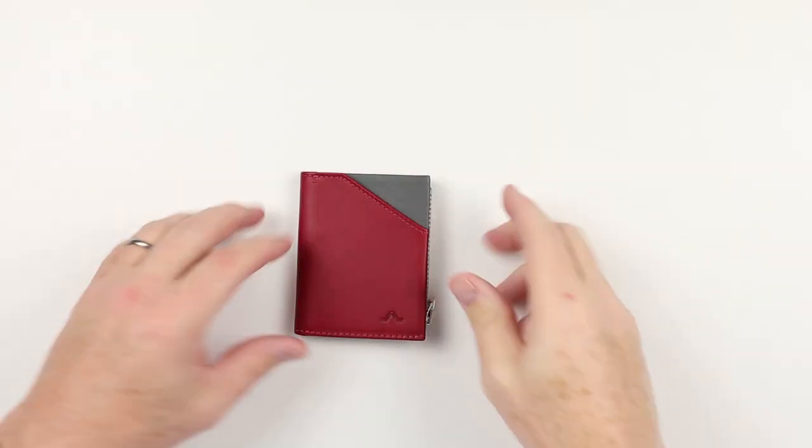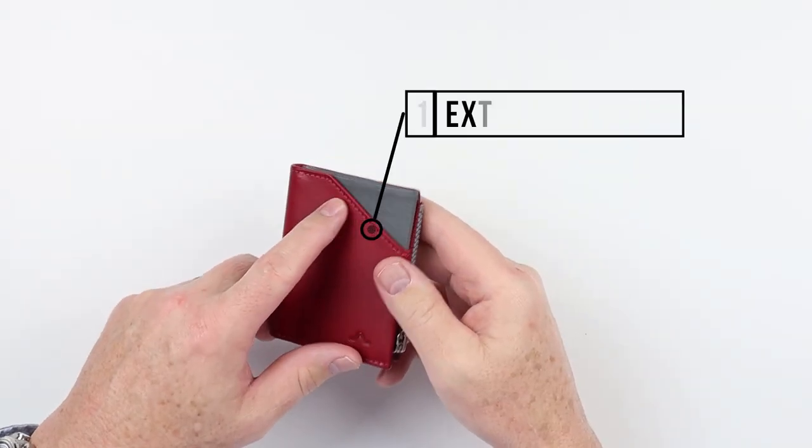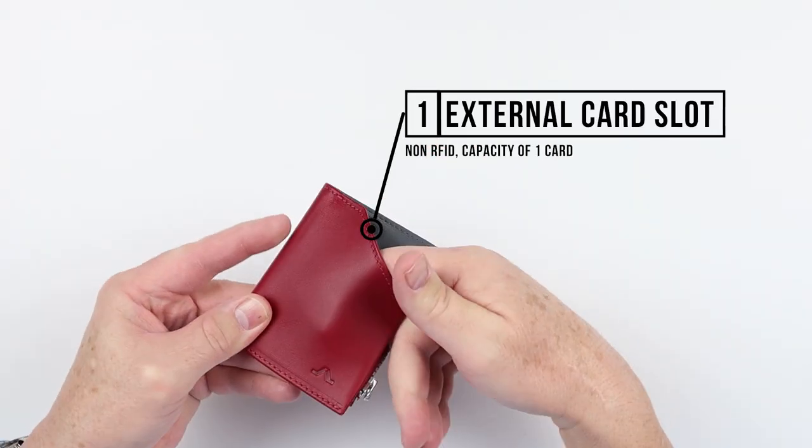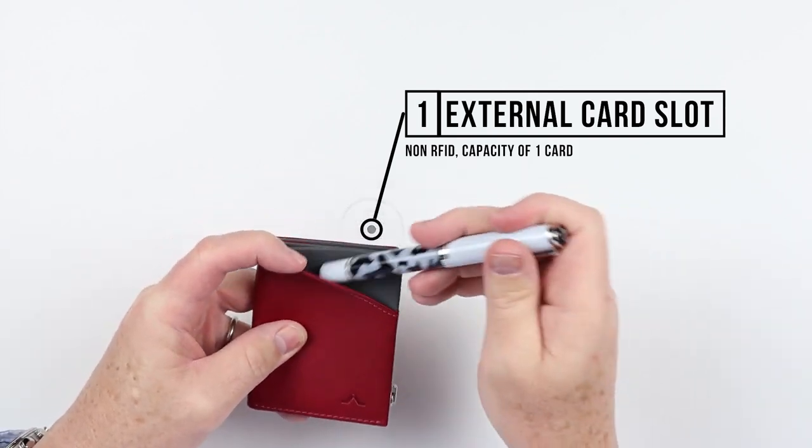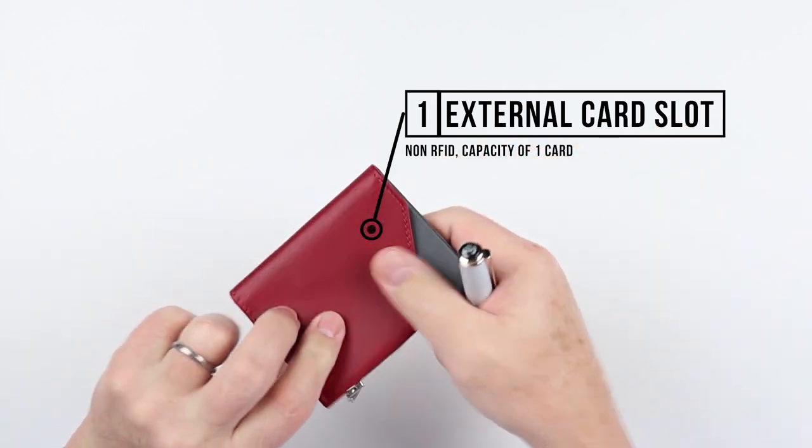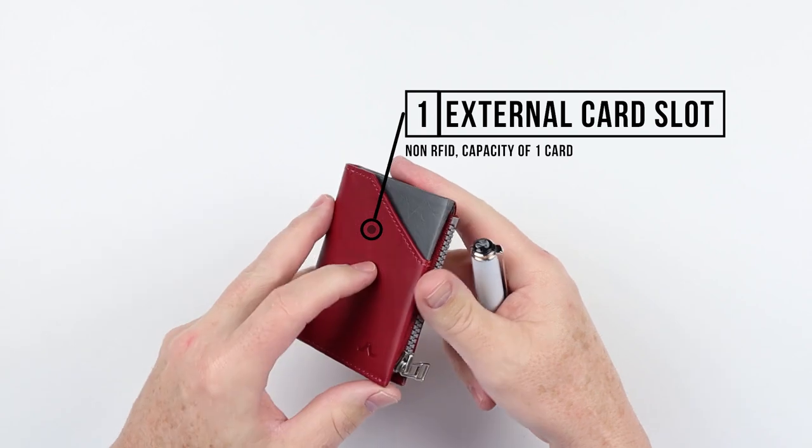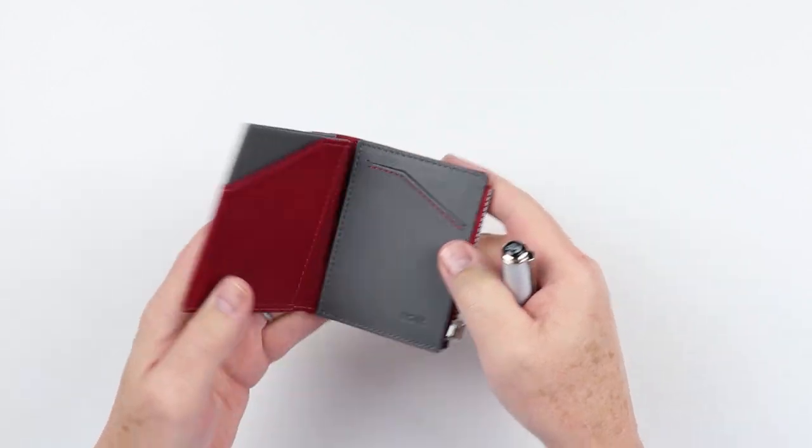Now to the feature review of the ROIC Zipcoin wallet. ROIC produces RFID in their wallets. Yeah I know, not the greatest, but this exterior pocket does not have RFID in it, so it provides a tap-capable opportunity for you. Everything else on the inside is RFID.